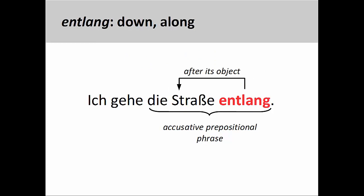Entlang, meaning down or along, is an unusual preposition in that it comes after its object. For example, Ich gehe die Straße entlang — I am going down the street, or I am going along the street. In some dialects, you may see this preposition with a dative object or used in conjunction with a dative two-way preposition. We will discuss two-way prepositions in a later presentation.